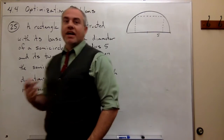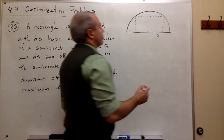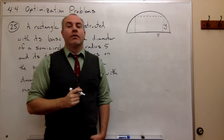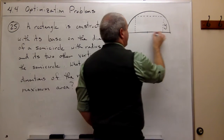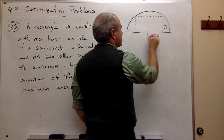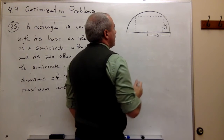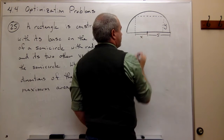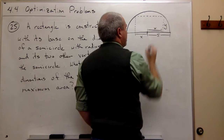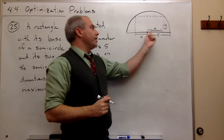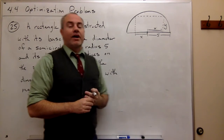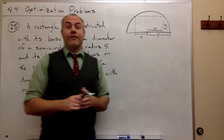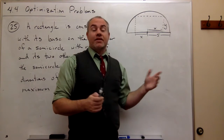I should probably set up some values here. The height of this rectangle, let's call that y. I also need a width of the rectangle. The radius 5 is the distance from the center all the way out to the edge. I'm going to talk about the distance from the middle of the rectangle out to the edge, and we'll just call that x. To get all the way across the width of that rectangle, it's actually 2x the way I've set it up. I'm doing it this way because it's going to make life a little bit easier.